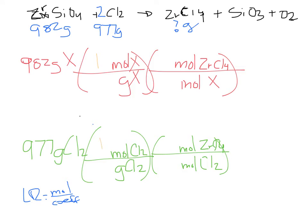They didn't directly ask what the LR is, so we actually need to convert. This is just a gram-per-mole conversion, that's all this is. We can plug numbers in: the mass I got for zirconium orthosilicate was 183.31, and I know the mass of chlorine is 70.9.